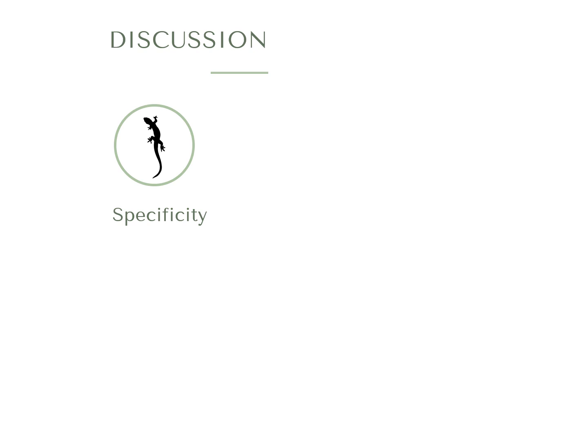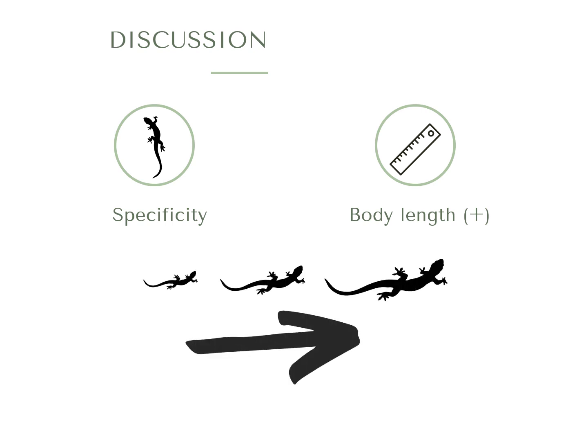Body length has a positive effect on the abundance of these parasites. This could be explained because larger individuals are also older, and therefore have more chances of having encountered vectors during their life, as well as developing chronic infections.